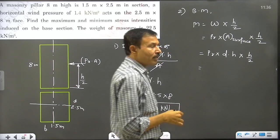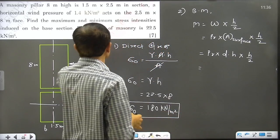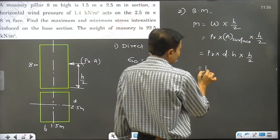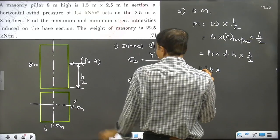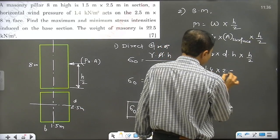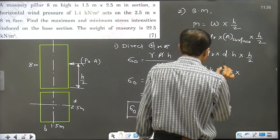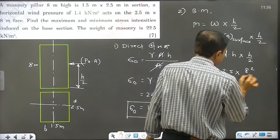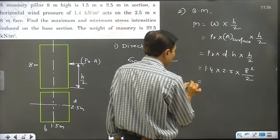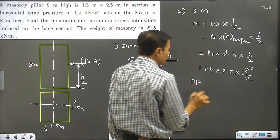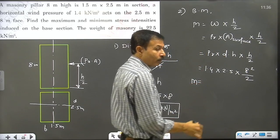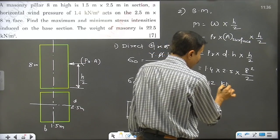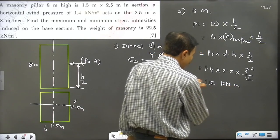Calculating directly: pressure is 1.4 kilonewton per meter square, d = 2.5 meter, h = 8 meters, so M = 1.4 × 2.5 × 8 × 8² / 2. M is equal to 1.2 kilonewton meter... the bending moment M is calculated.